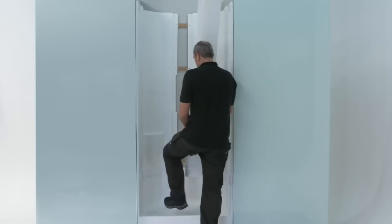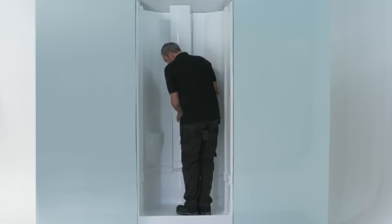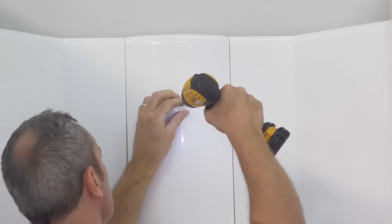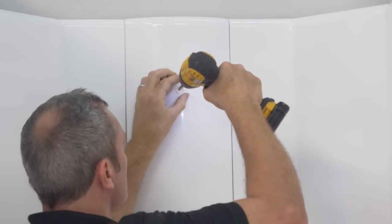To fit the center column slide the column down between the wall units ensuring that the clips hook behind the base unit. Screw fix into place at the top of the column.